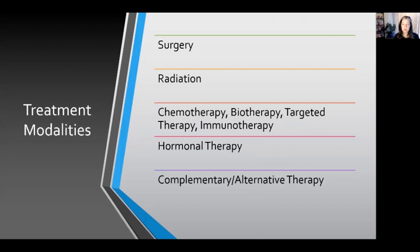Hormonal therapies use hormones to treat specific types of cancers that are influenced by our hormones, such as breast or prostate cancers. There are also many complementary or alternative therapies that can be used in conjunction with other treatment modalities, such as acupuncture, massage, music therapy, or aromatherapy, to support cancer treatments and help with symptom management.